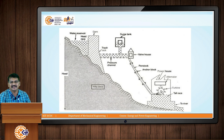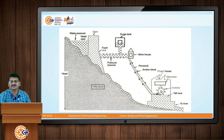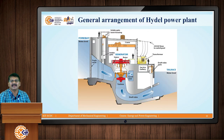The surge tank releases excessive pressure, acting as a safeguard for the penstock. Also, when the power station is started and initial water in the penstock is very low, the surge tank can supply additional water for power generation. Then we have the powerhouse, where reaction turbines and impulse turbines are available. There is also a second reservoir where water is collected after generation of power. In the powerhouse, we generate electricity using the turbine and generator.